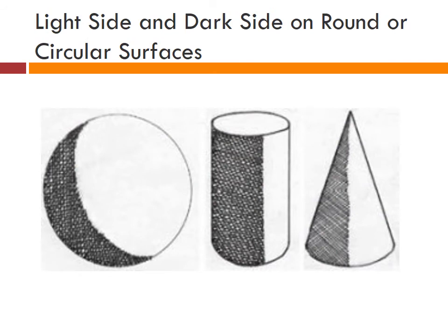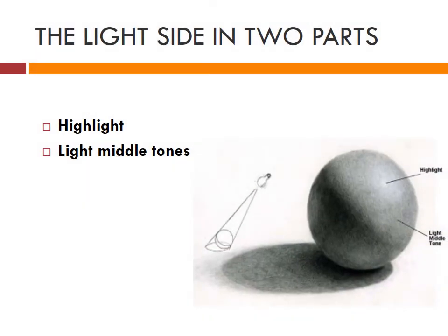Light side and dark side on round or circular surfaces: when one light source is present, the dark side is always darker than the light side of the object, and the light side is always lighter than the dark side. The light side is divided into two parts — highlight and light middle tones. Highlight is the lightest spot or streak where the light strikes the subject, located exactly in the middle of the light side between the shadow edge and the edge of the object.